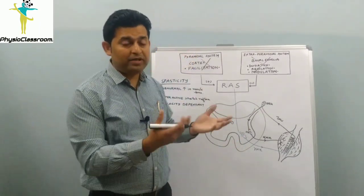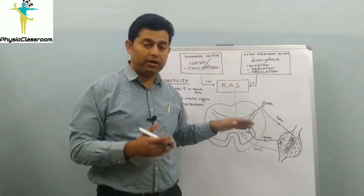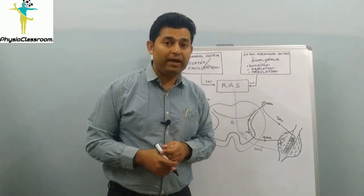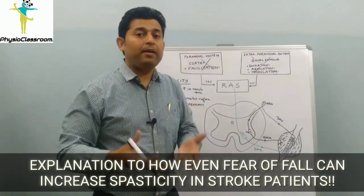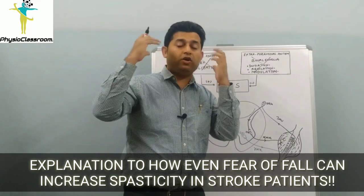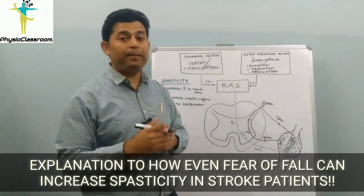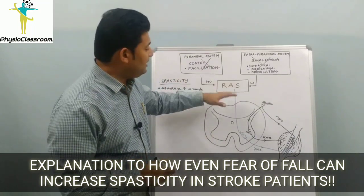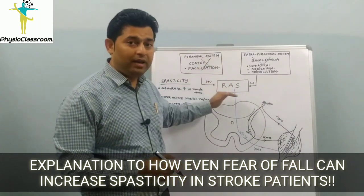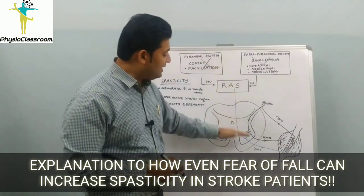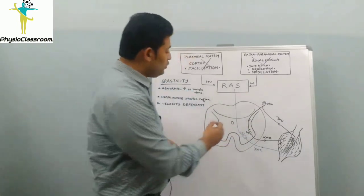A very basic example to understand this mechanism: if a friend suddenly frightens you, you immediately have a change in your posture, gesture, and emotions — all happening involuntarily via brain stem pathways coming from the pontine and medullary region, descending down to the spinal cord.